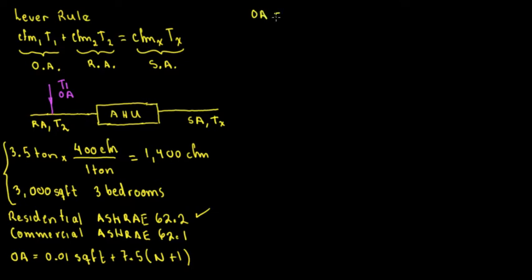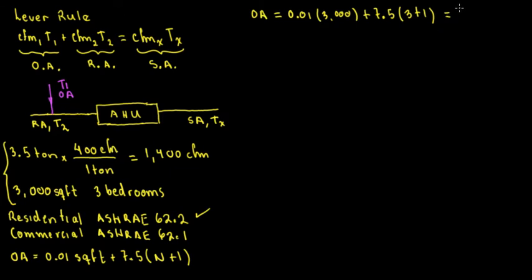Our outside air needed is: 0.01 × 3,000 sq ft + 7.5 × (3 bedrooms + 1). If we do the math, for this house the minimum required ventilation is 60 CFM. So the outside air is going to be 60 CFM.